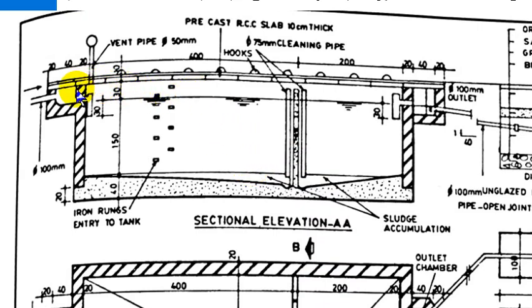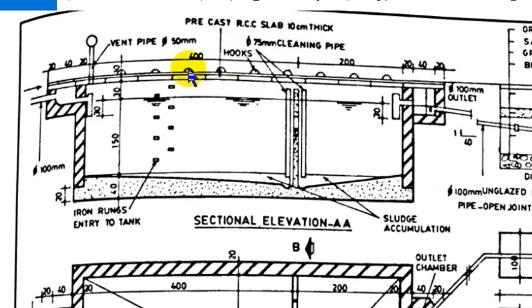This wall also has a cover slab. The cover slab is a precast RCC slab. This slab is 10 cm thick. There is a 50 mm diameter air vent pipe.